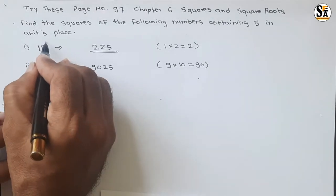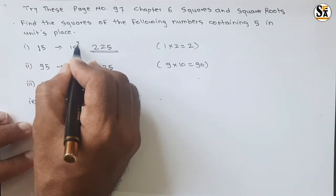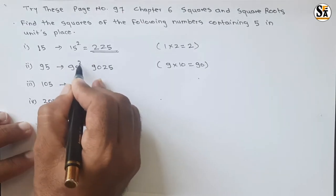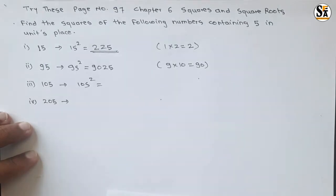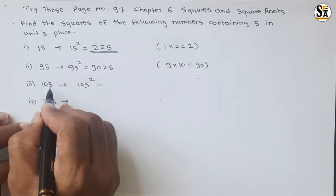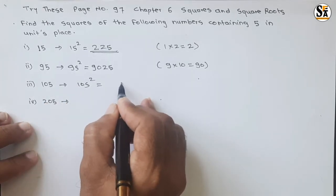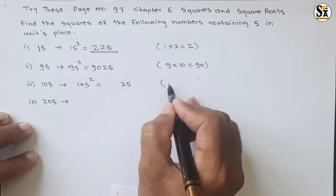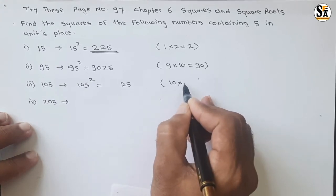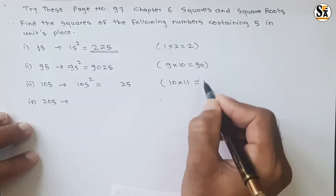Then 105 squared equals: write 25 first. Again there is 5 at unit place, so write 25 here. The remaining number is 10, so multiply 10 with the next immediate number which is 11. The multiplication is 110, so write 110 here. We will get the square of 105.